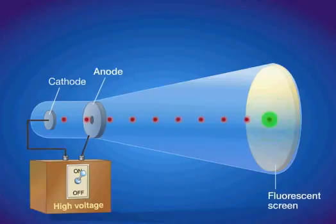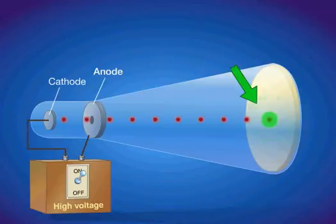When the ray strikes the specially coated surface, the cathode ray produces a strong fluorescence or bright light.